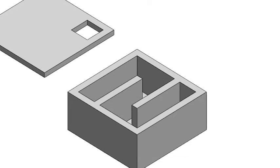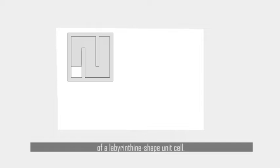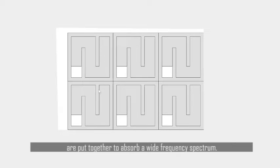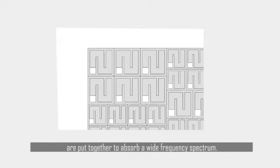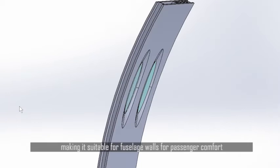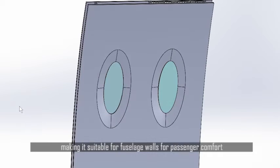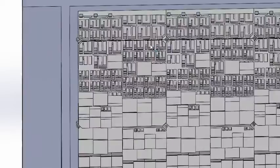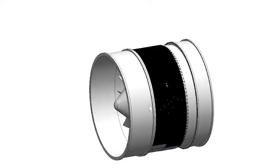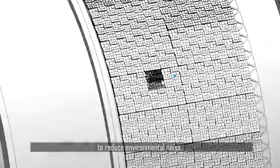This annoying noise disturbance can be absorbed by properly designing the size and thickness of a labyrinthine shape unit cell. Different unit cells are put together to absorb a wide frequency spectrum. The final solution is modular, making it suitable for fuselage walls for passenger comfort, as well as for the high curvature range in nacelles to reduce environmental noise.